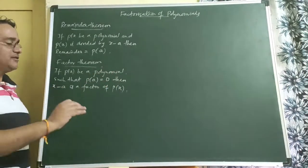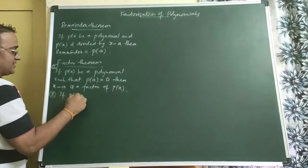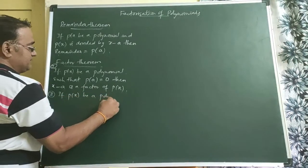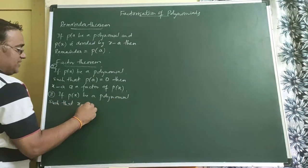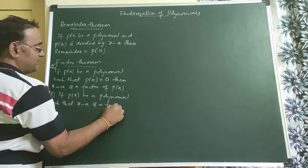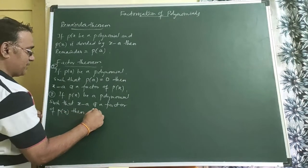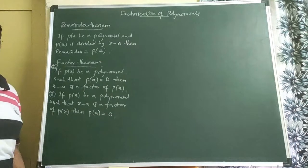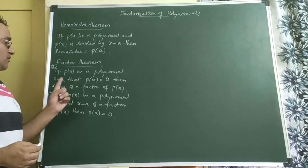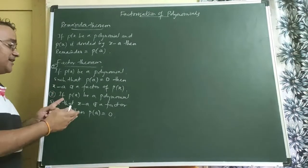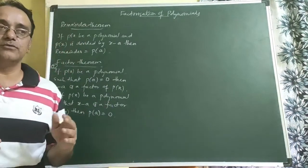There are two parts of the Factor Theorem. The first part: if P(a) = 0, then (x − a) is a factor of P(x). The second part: if P(x) is a polynomial such that (x − a) is a factor of P(x), then P(a) = 0. So these are the two versions of the Factor Theorem — if P(a) = 0 then (x − a) is a factor, and if (x − a) is a factor then P(a) = 0.